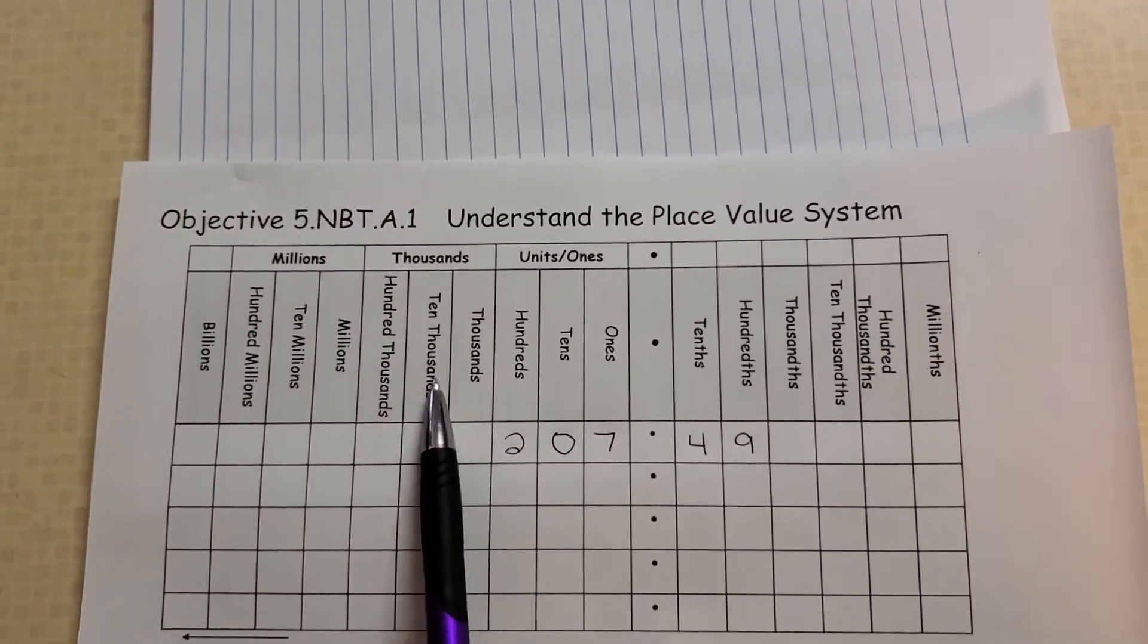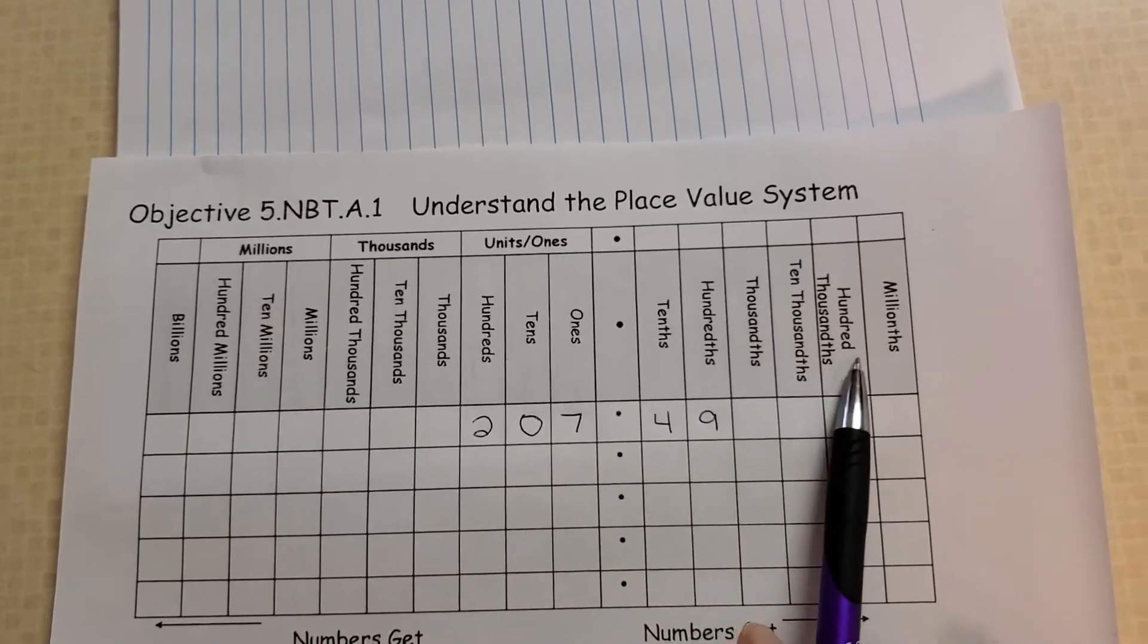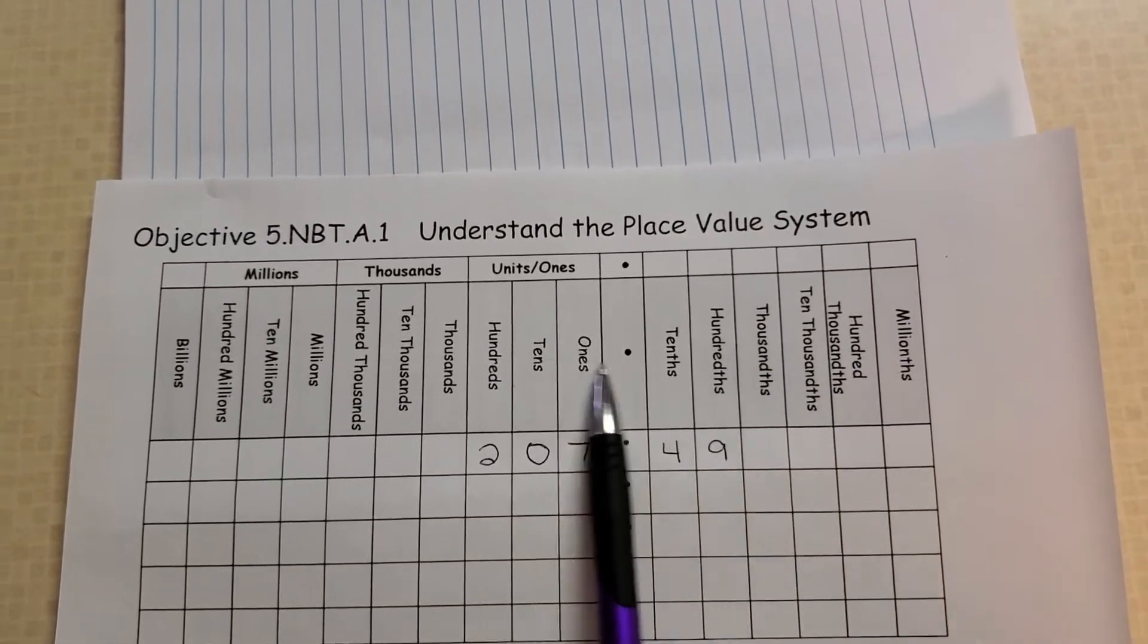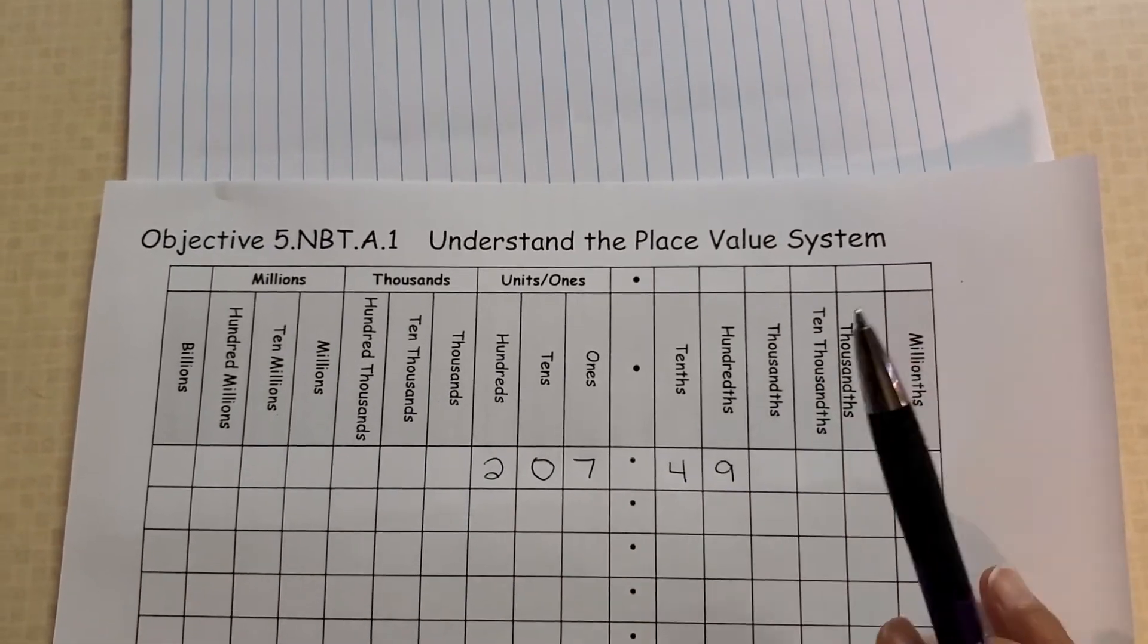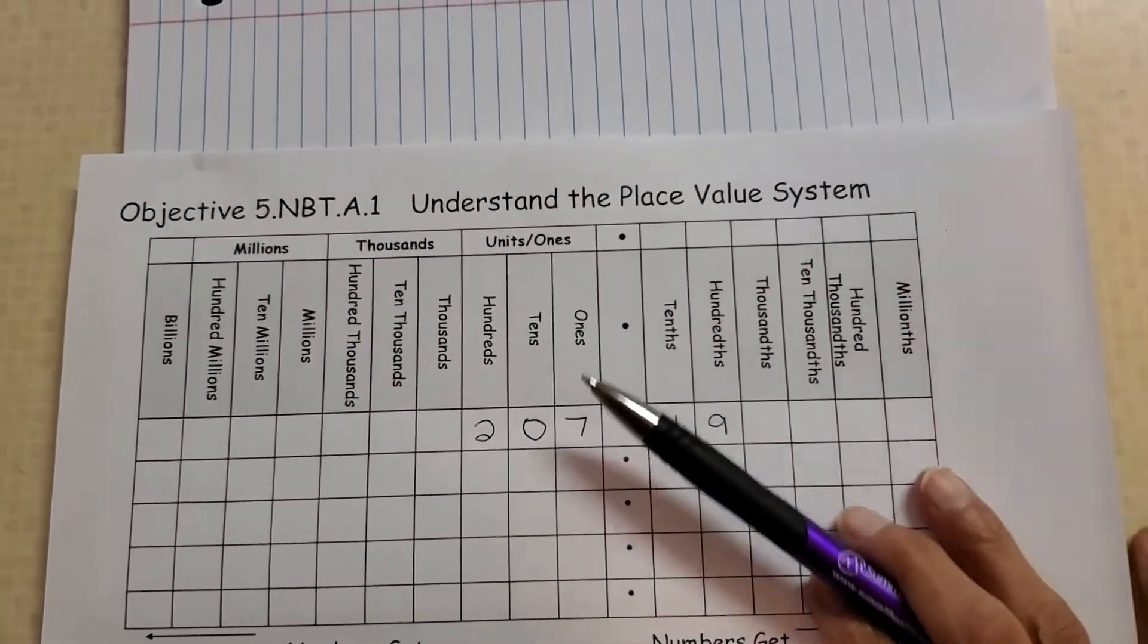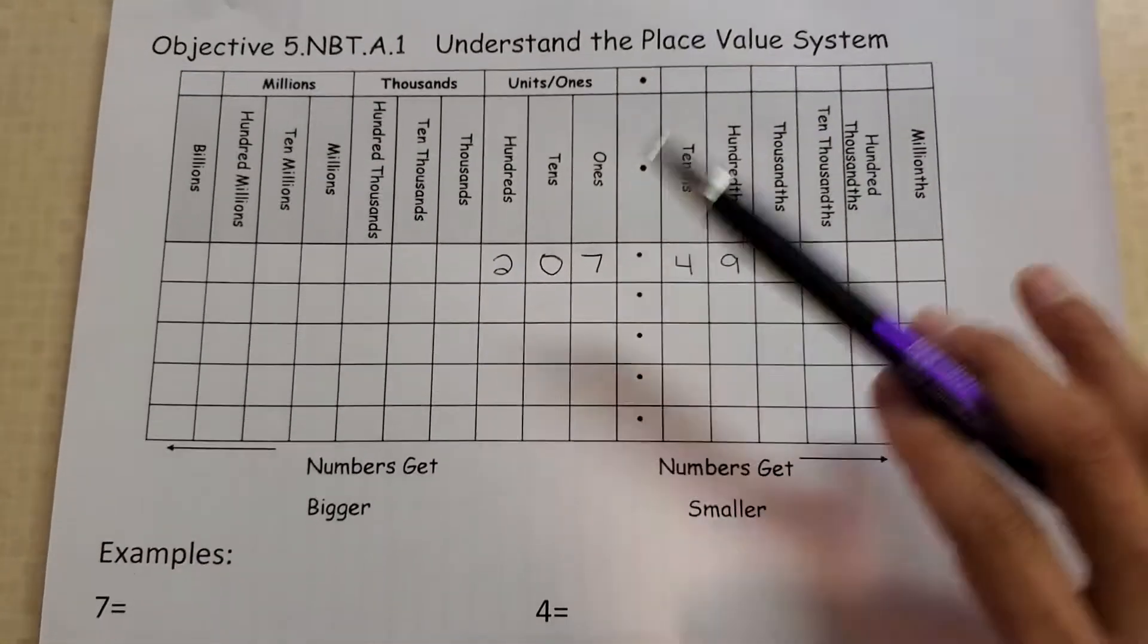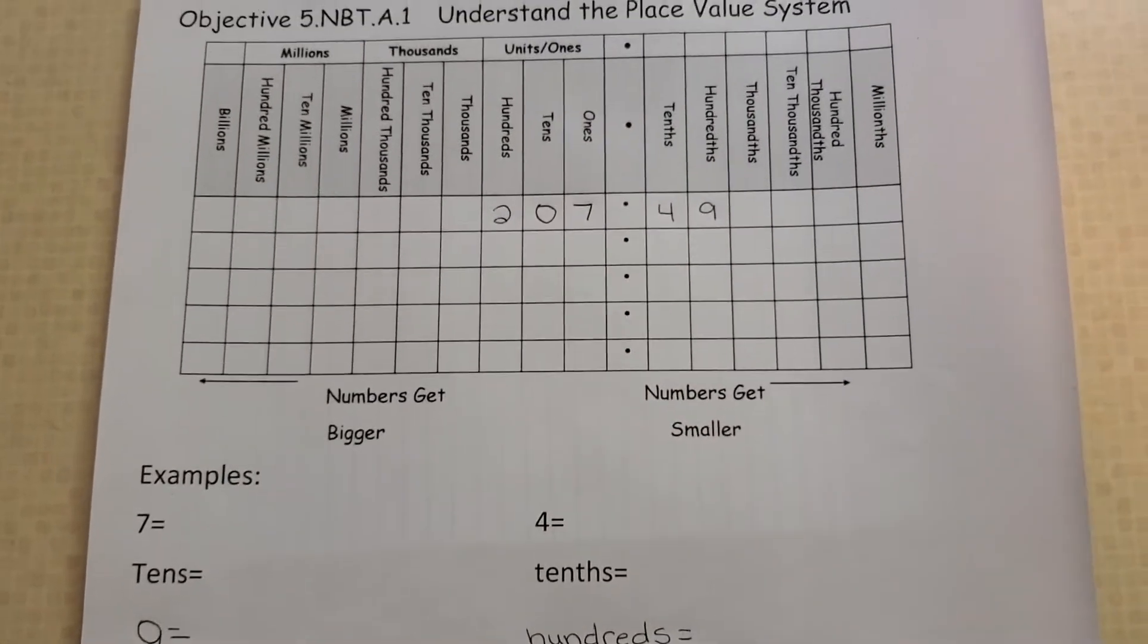If you want to stop at the ten thousand and the thousands place, you're only going to need that section today. So go ahead and pause, write that out, and then write these examples at the bottom. Go ahead and press pause.